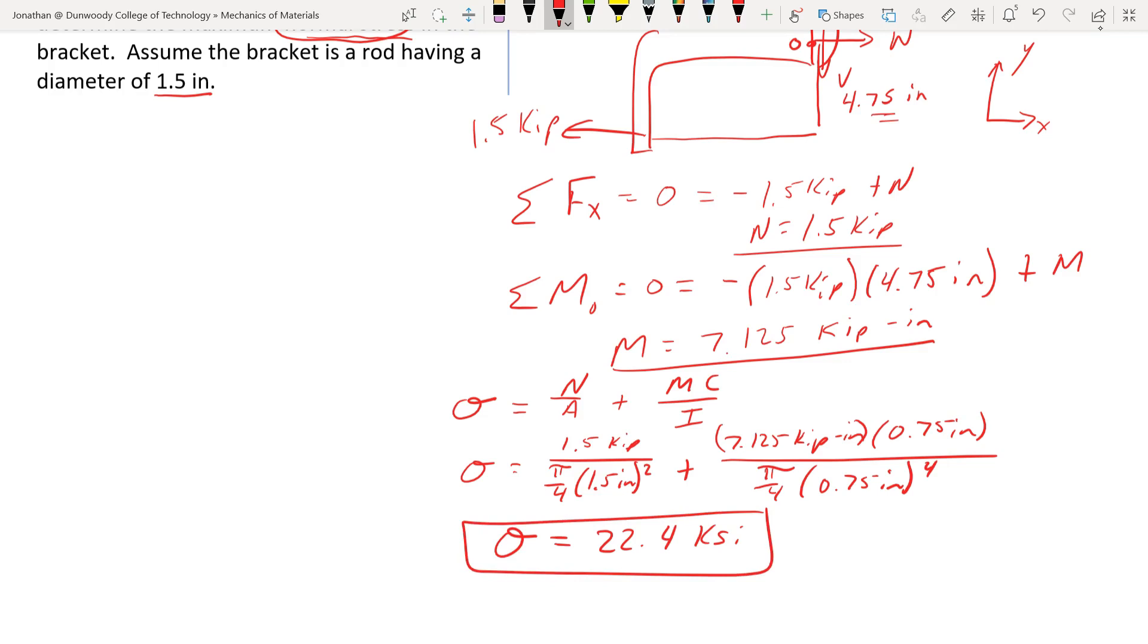Before, if we only had this chunk here, what would that have been before? We had 1.5 kip over pi over 4 times 1.5 squared. We carry that through. So we would have only had about 0.85 ksi.